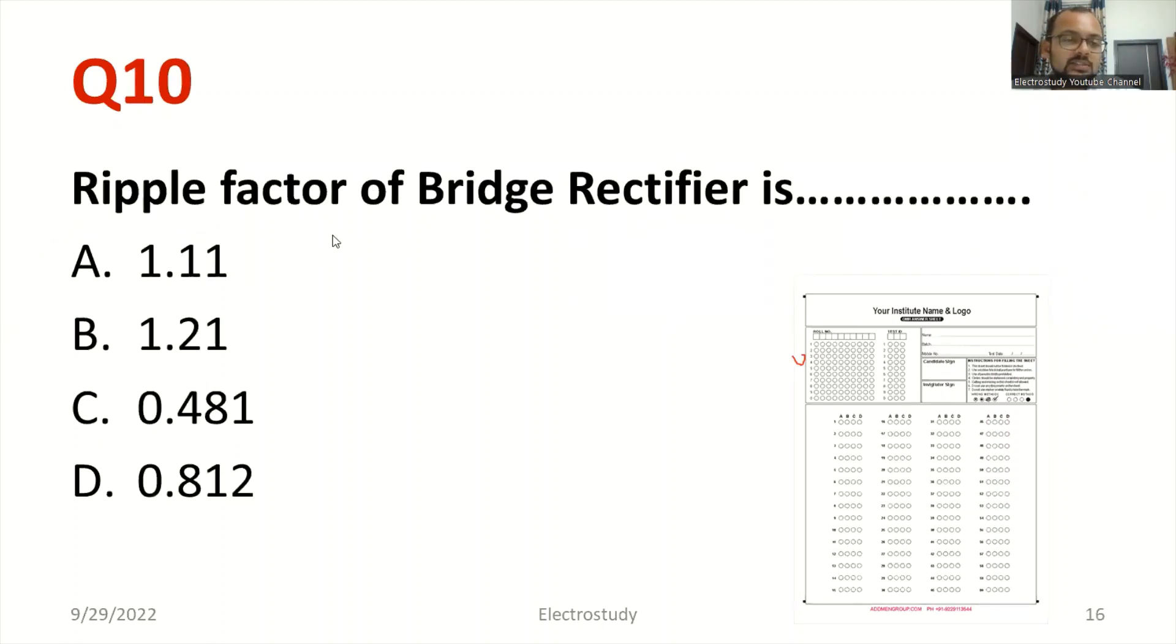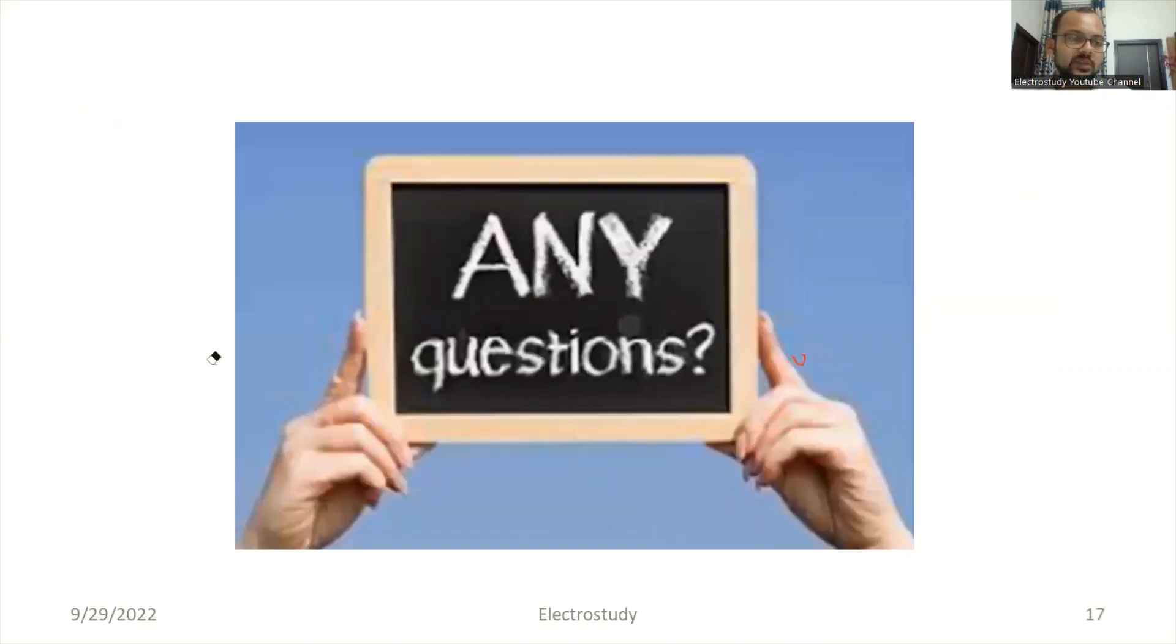Ripple factor of bridge rectifier is, can you identify the answer? The right answer is, what is the correct answer of bridge rectifier? Ripple factor of bridge rectifier. I already referred the table. The right answer is 0.481. Please select option C. Please keep in mind about that particular table. Refer the table. Try to remember that will be helpful for competitive examination.